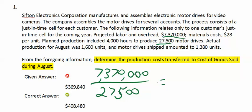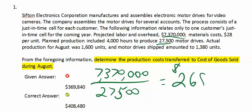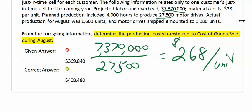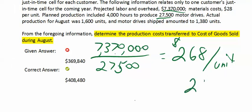My conversion costs will be $268 per unit. So for every unit I convert or complete, my conversion costs will be $268. My material costs will be $28. Adding those together, my total cost per unit is $296.